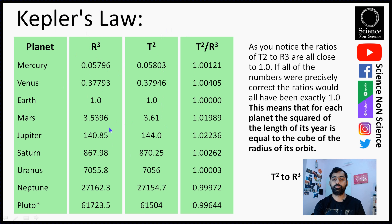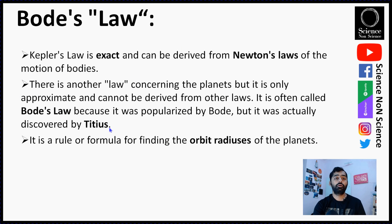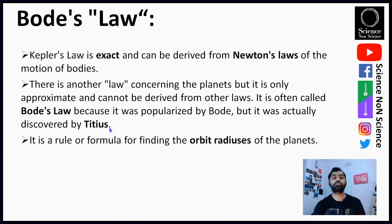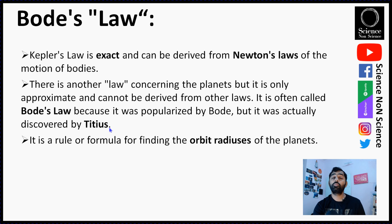Kepler's laws are exact and can be derived using Newton's laws of motion. There is another law related to planetary distances called Bode's law. It was most popularized by Bode, but it was actually discovered by Titus — hence it is also known as the Bode-Titus law or the Titus-Bode law. This formula gives us the approximate orbital radius of each planet.